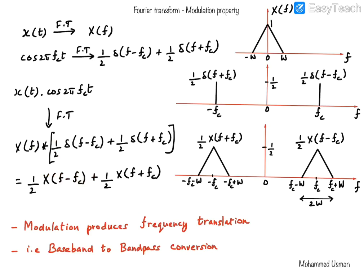Let's see that pictorially. We have X(t) with Fourier transform X(F) — that's the baseband spectrum with bandwidth W hertz. The spectrum of cosine(2πF_c·t) is the sum of two shifted deltas: delta(F − F_c) is the delta function shifted to the right by F_c scaled by half, so it's (1/2)·delta(F − F_c); and the second term is the delta function shifted to the left by F_c, giving a delta at −F_c also with amplitude 1/2. That is the Fourier transform of cosine(2πF_c·t).